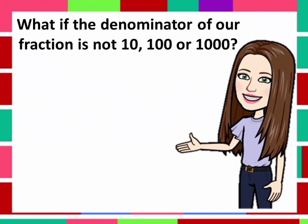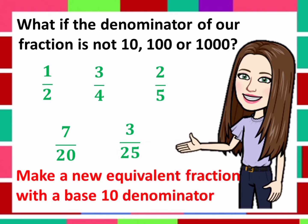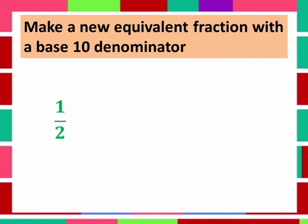What if the denominator of our fraction is not 10, 100, or 1000? For example: 1 half, 3 fourth, 2 over 5, 7 over 20, and 3 over 25. So, make a new equivalent fraction with a base 10 denominator. Let's have 1 half as an example.